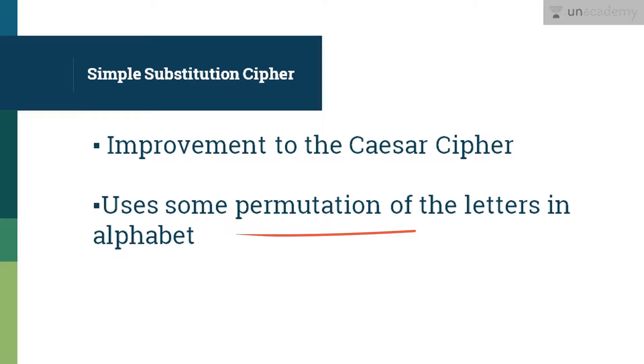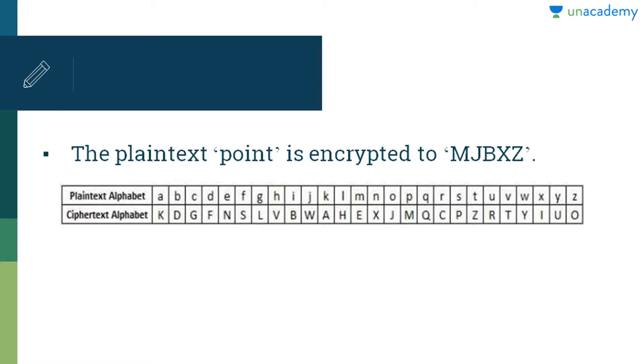So with 26 letters in the alphabet, the possible permutations are factorial of 26 which is equal to 4 times 10 to the power 26, which is huge. Now the sender and receiver may choose any one of these possible permutations as a ciphertext alphabet. This permutation is the secret key of the scheme.